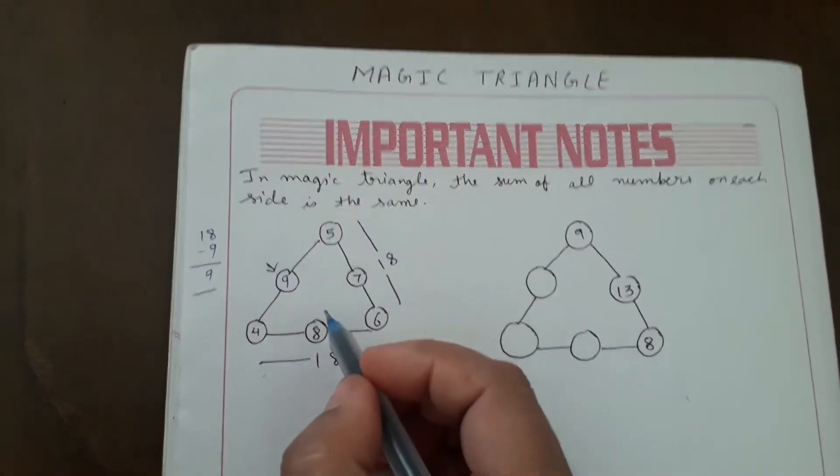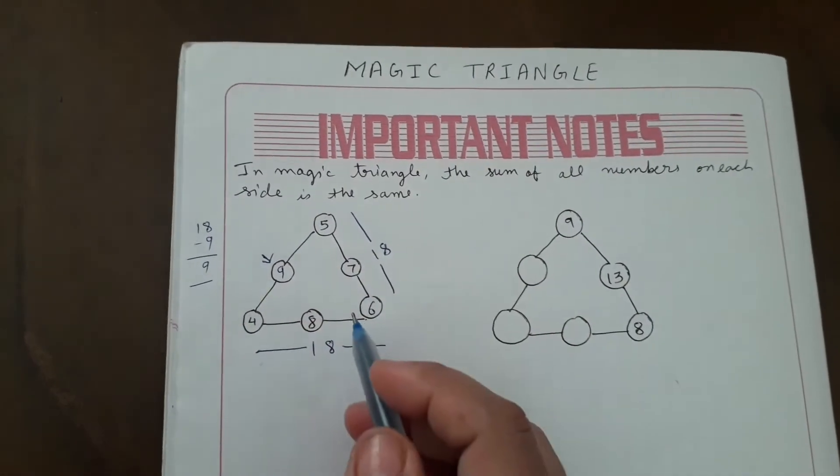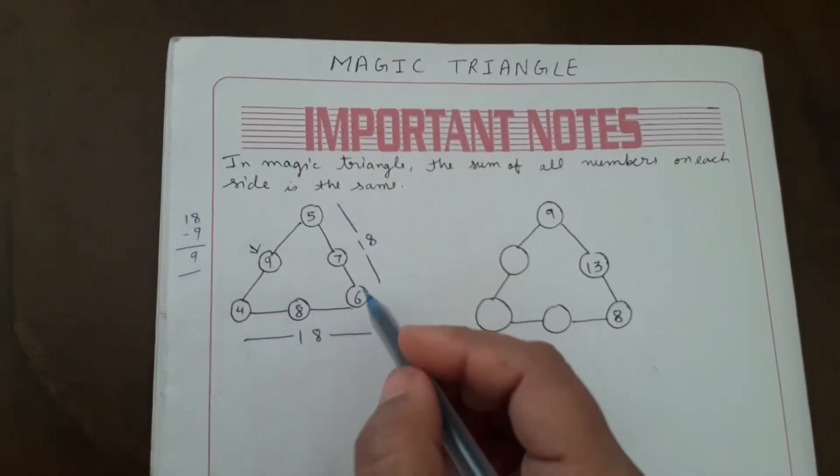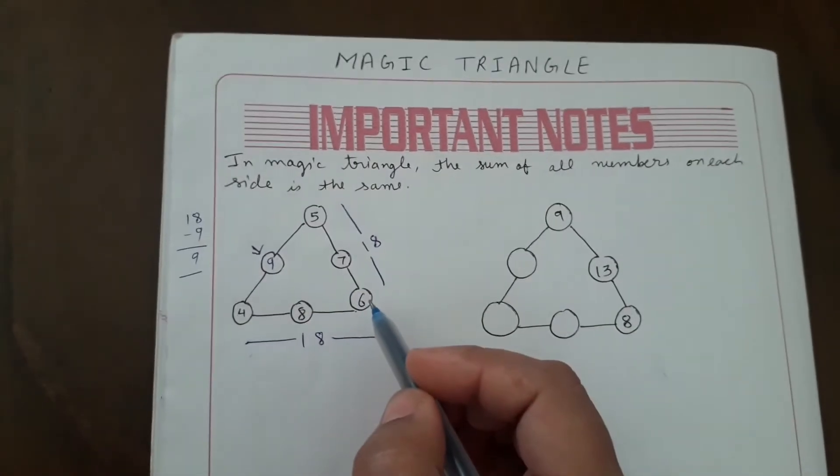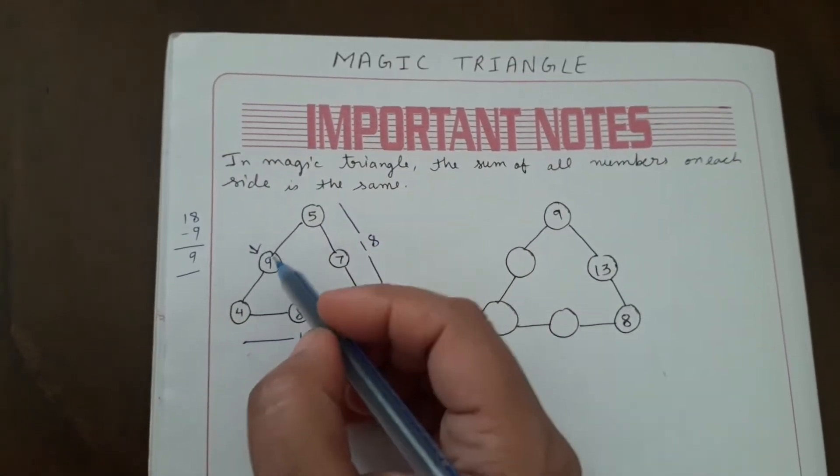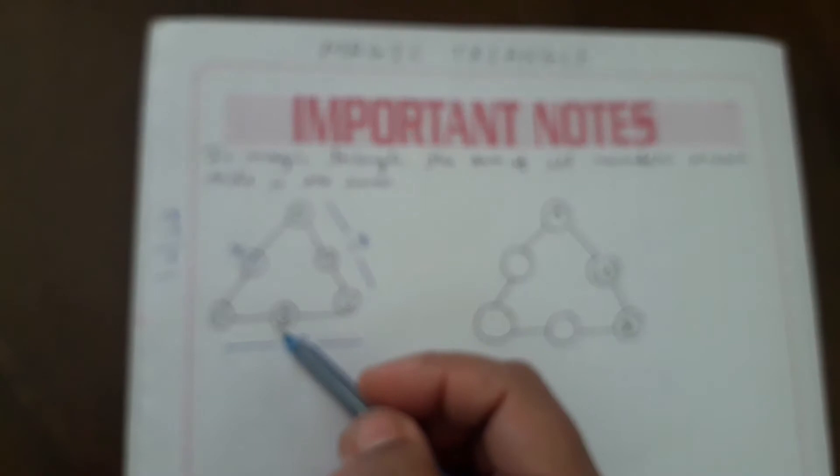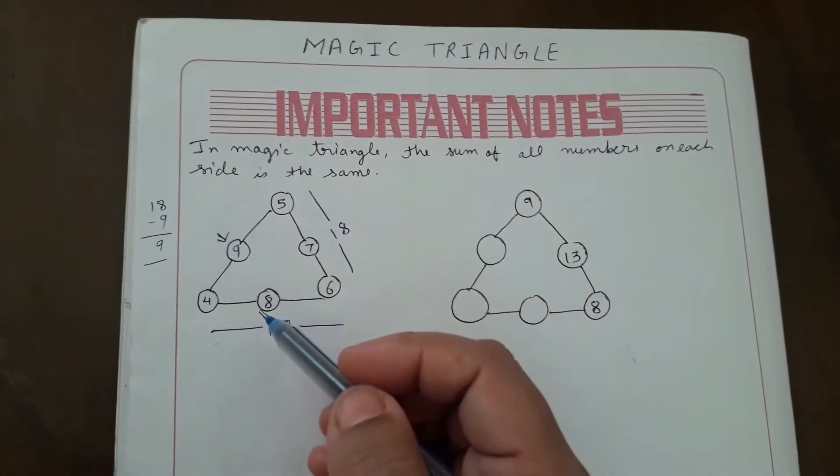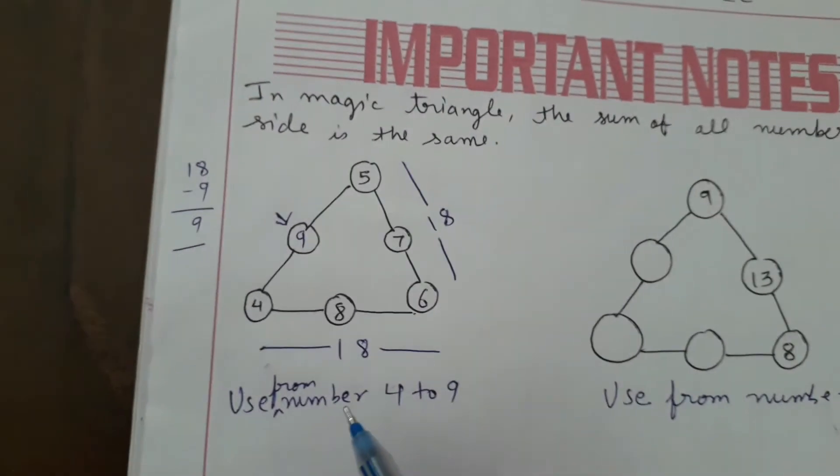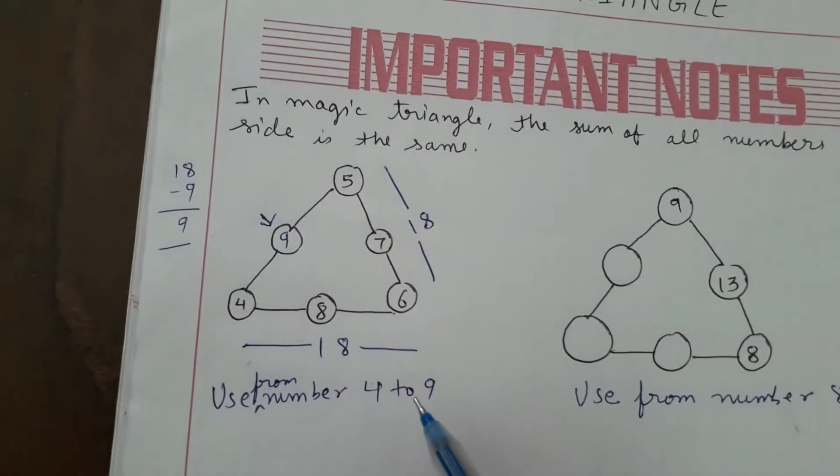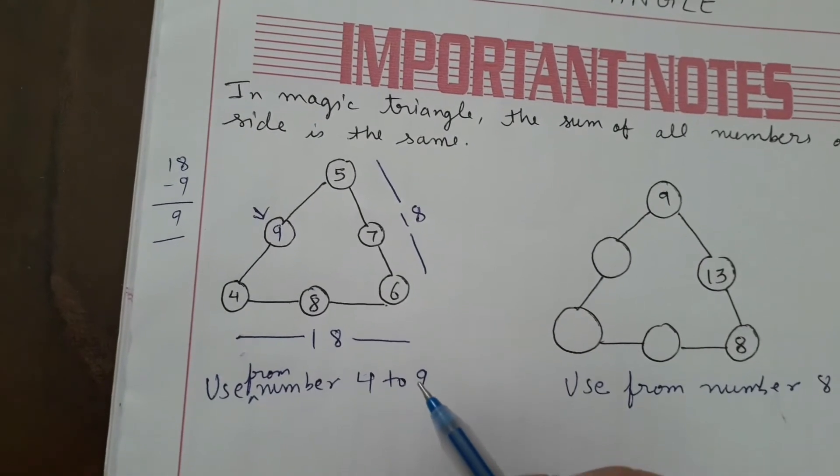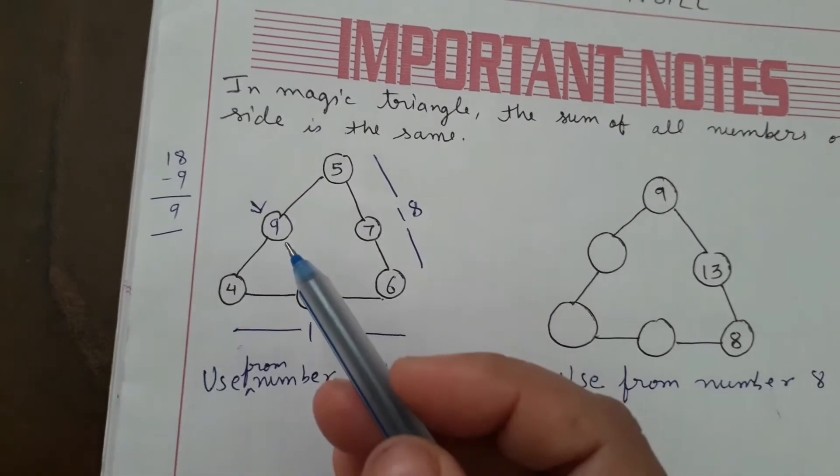This way you can find and fill the magic triangle. First, sum the side where all three numbers are given. Here it is used for numbers 4 to 9. The number is 4 to 9, so we got 9.